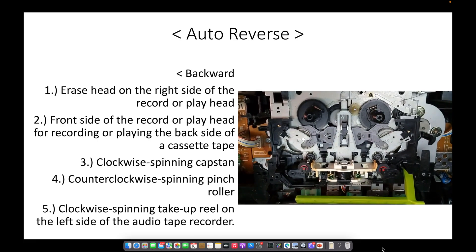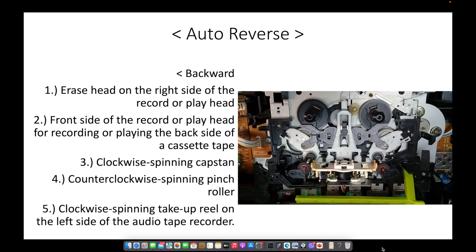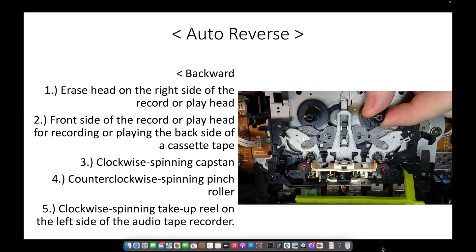In backward mode, when the ribbon is rolling to the left, the erase head on the right side of the record or playhead exists. The front side of the record or playhead for recording or playing the back side of a cassette tape will be used.